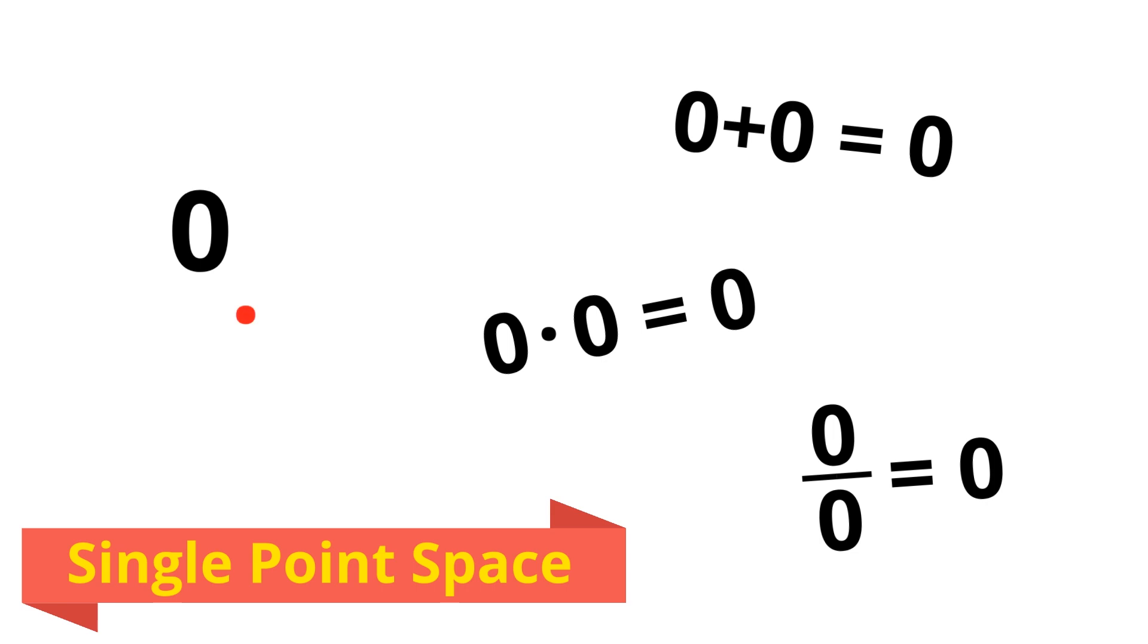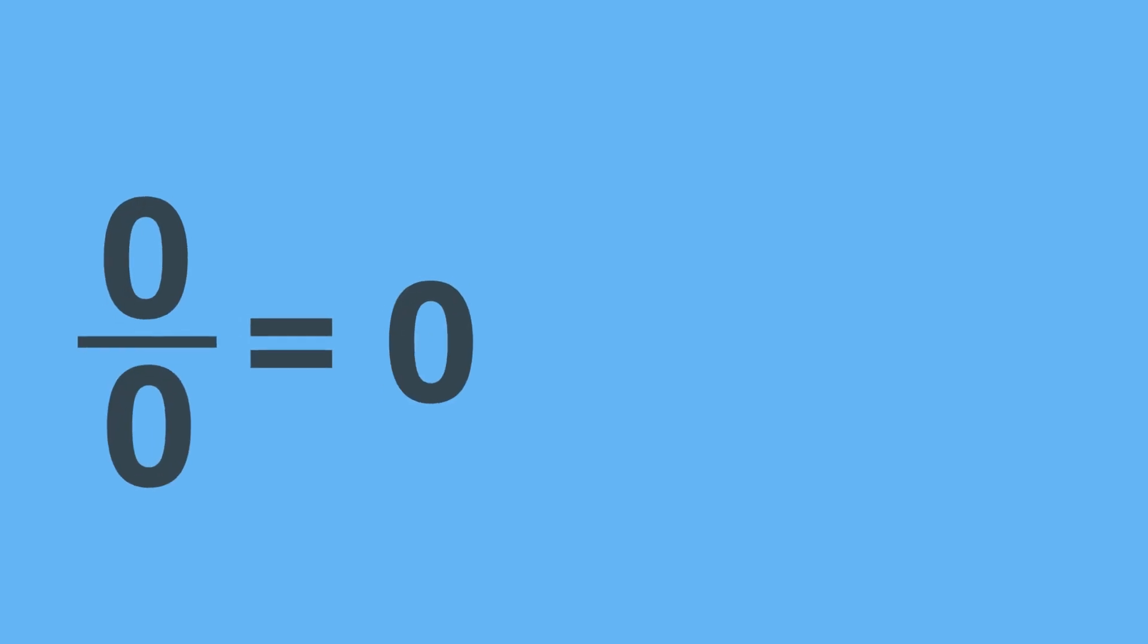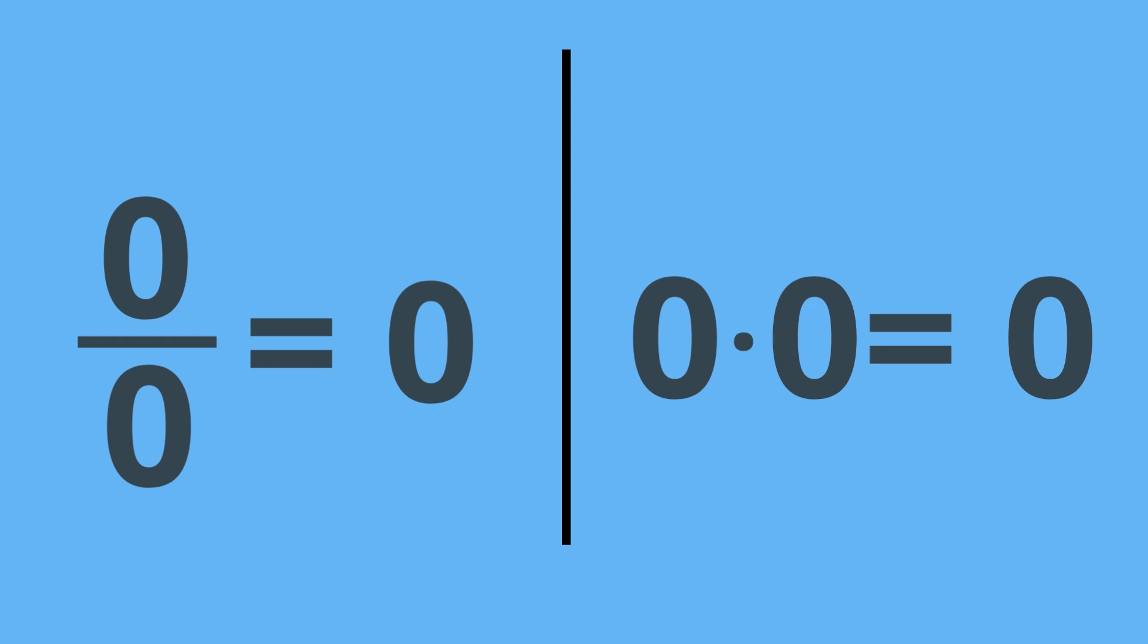Since this is the only point we could ever use, and the only answer we could ever get, it fits perfectly with all of the usual math rules. Zero divided by zero doesn't cause any problems. That's because the multiplication problem, zero is equal to zero times zero, is really the only one we have to consider. This system simply doesn't have any non-zero elements to cause any problems.